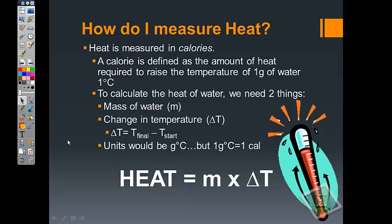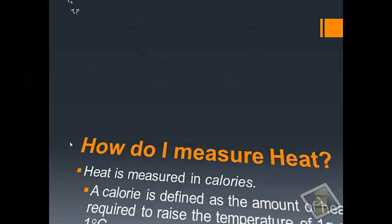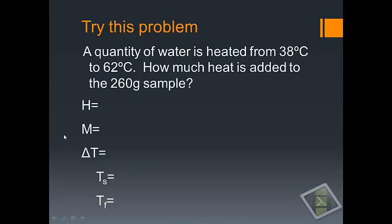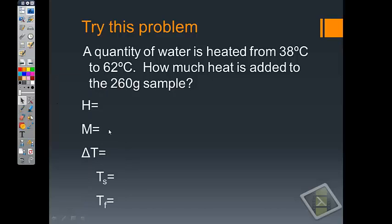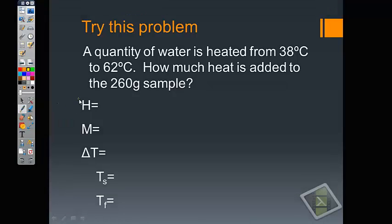So now that we know about that, let's take a look at a quick example of a problem that we can try dealing with heat. So this is your typical heat problem, and this is the way that it's set up. And we look at it and we say a quantity of water is heated from 38 degrees Celsius to 62 degrees Celsius. How much heat is added to the 260 gram sample? Now I'm going to bring up my writing up here. And I've kind of set it up very similar to the way that we did density early on. I want to write down these things in my problems, because of my first three variables—heat, mass, and change in temperature—I'm going to have two of those three things. I need to be able to go through the problem and figure out what are the two of the three things that I have.